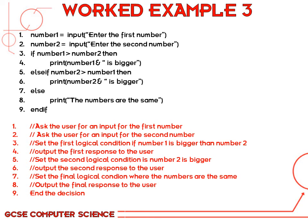So if number one is bigger than number two, then we output to the screen 'number one is bigger.' The second part of the condition: if number two is bigger, then output 'number two is bigger.' And finally, the only other possibility is that the two numbers are exactly the same — so that's going to be the else: 'the numbers are the same.' Then the last line is end if — we need that to say that's the end of the if statement, it's not looking for any more conditions.